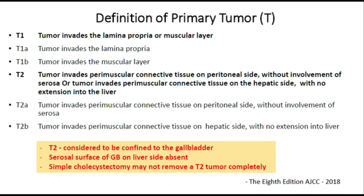Briefly, T1 tumors are divided into T1A and T1B. T1A invades the lamina propria and T1B invades the muscular layer. Since there is no submucosa, T1B directly invades into the muscle layer. T2 is further divided into T2A and T2B. T2A tumors invade the perimuscular connective tissue on the peritoneal side, that is towards the abdomen, and T2B is towards the hepatic side.